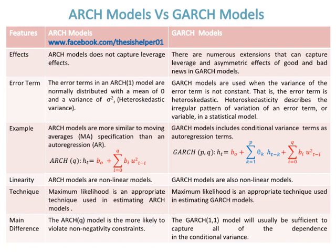Heteroskedasticity describes the irregular pattern of variation of an error term, or variable, in a statistical model. ARCH models are more similar to moving averages, MA specification, than an autoregression, AR. Whereas, GARCH models include conditional variance terms as autoregression terms.